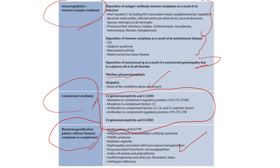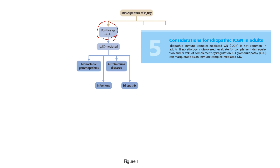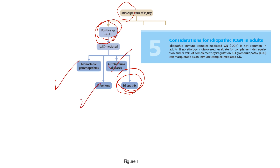Now let's discuss the immunoglobulin immune complex-mediated category in detail. It is important to know that idiopathic MPGN pattern is not common. Therefore, when you have a patient with MPGN pattern that is positive for immunoglobulin plus or minus complement, you must exhaust yourself to find the underlying cause, because idiopathic MPGN pattern is uncommon.